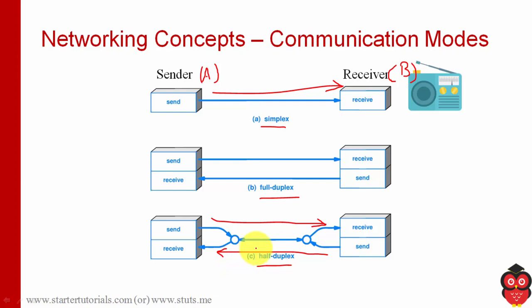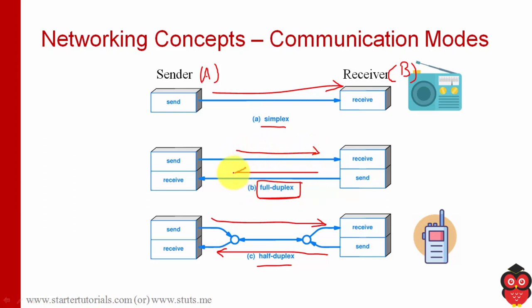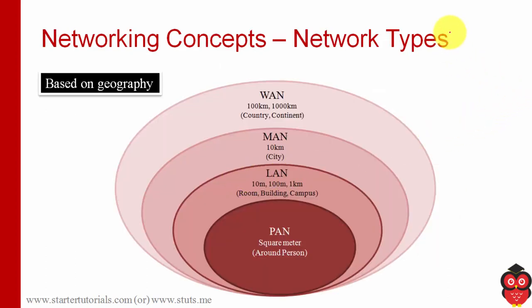In half duplex, A can send data to B or B can send data to A, but one after another — not simultaneously. An example is walkie-talkie: only one person can talk on the channel while the other listens, then they switch. In full duplex, either party can send and receive data simultaneously with no need to wait. An example is browsing the internet on a laptop — your system sends data to a server and the server sends data back simultaneously.